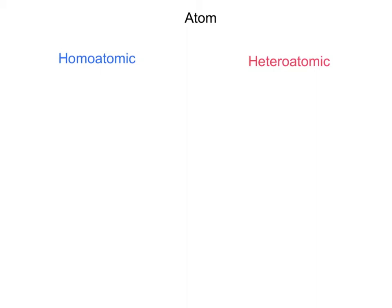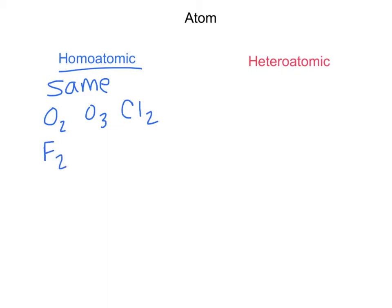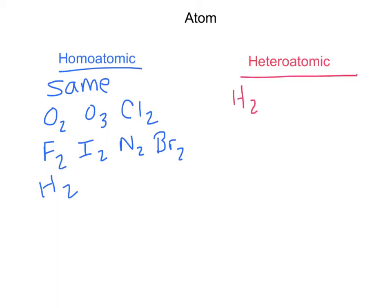With an atom, homoatomic means the same — just the same element. For instance, O₂, O₃, Cl₂ — these are groups of elements. The diatomics are F₂, I₂, N₂, Br₂, H₂ — they're groups of elements that hang together but they're the same, so they're homoatomic. Heteroatomic, on the other hand, is when you have different elements, like H₂O, CH₄, or NH₃ — those are heteroatomic.